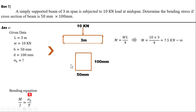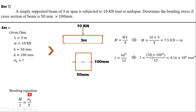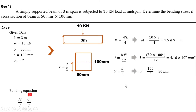For the rectangular section of 50 mm × 100 mm, putting b = 50 and d = 100 into I = bd³/12, we get I = 4.16 × 10⁶ mm⁴. The distance y from the extreme layer to the centroidal axis is d/2 = 50 mm.